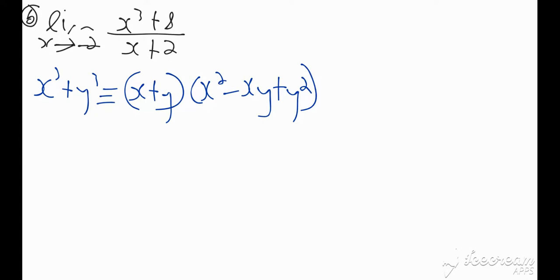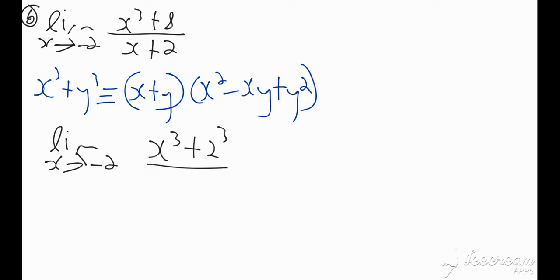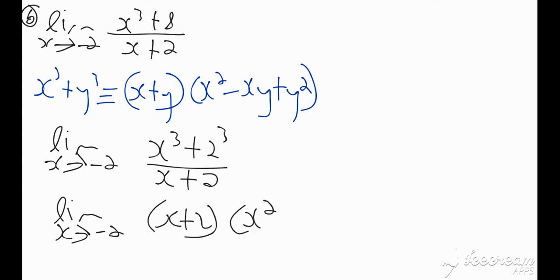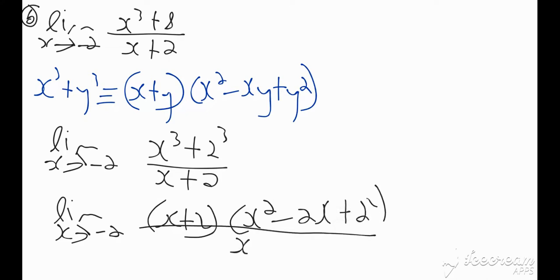Let us now rewrite the numerator. I'm going to have the limit as x tends towards minus 2 of x cubed plus 2 cubed all over x plus 2. By comparison, we can think of x as x and y as 2, and replace in the identity accordingly. So I'm going to have the limit as x tends towards minus 2 of (x plus 2) times (x squared minus 2x plus 2 squared), which you could write as 4, all over x plus 2.